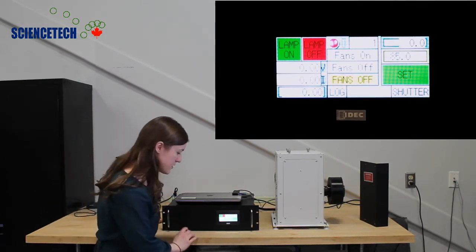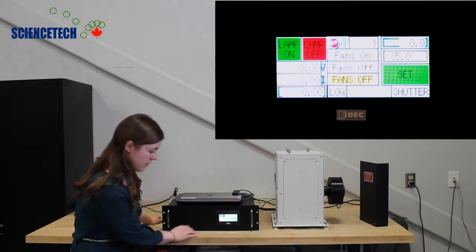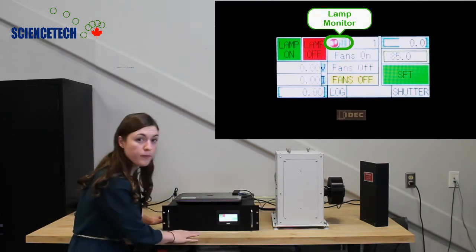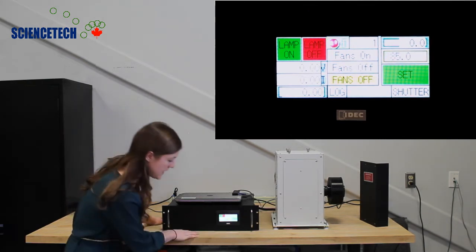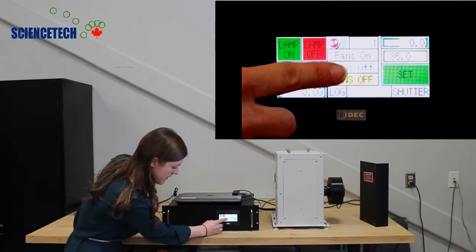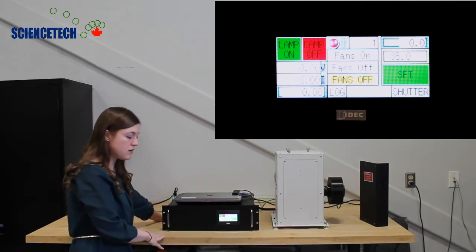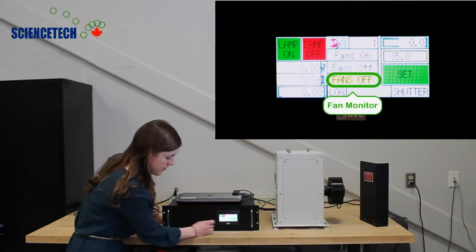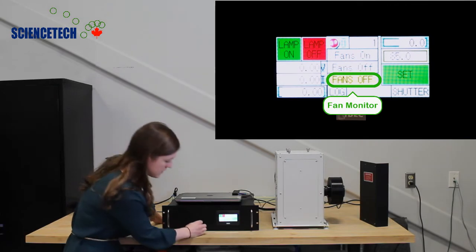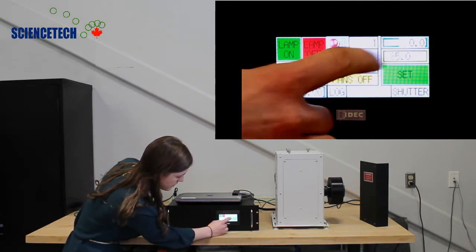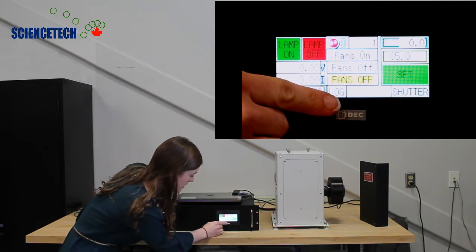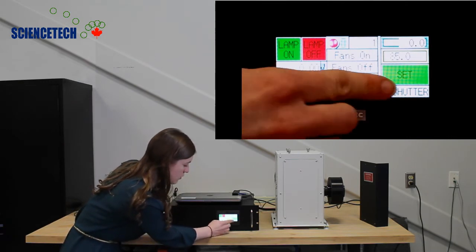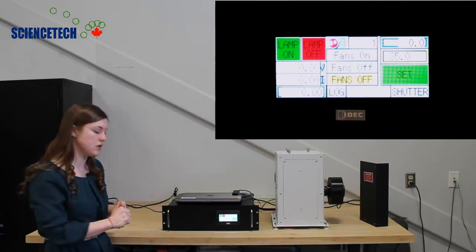On the main screen you have the lamp on and off buttons. There's the circular monitor there showing you whether the lamp is currently on or off. And there are the fan buttons for turning the fans on and off and there's the fan monitor. Currently the fans are off. It also has the power supply setting where you can increase or decrease and it has the facility to go to the shutter screen and to the log screen.